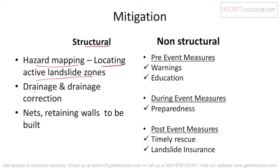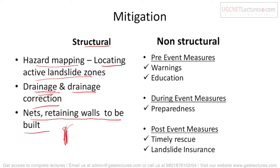Structural mitigations for landslides include drainage correction — if rainwater has a proper drainage system, earth flow and debris flow can be prevented. We can also build nets or retaining walls in areas prone to landslides or rock falls, so that rocks and debris cannot fall down onto roads.